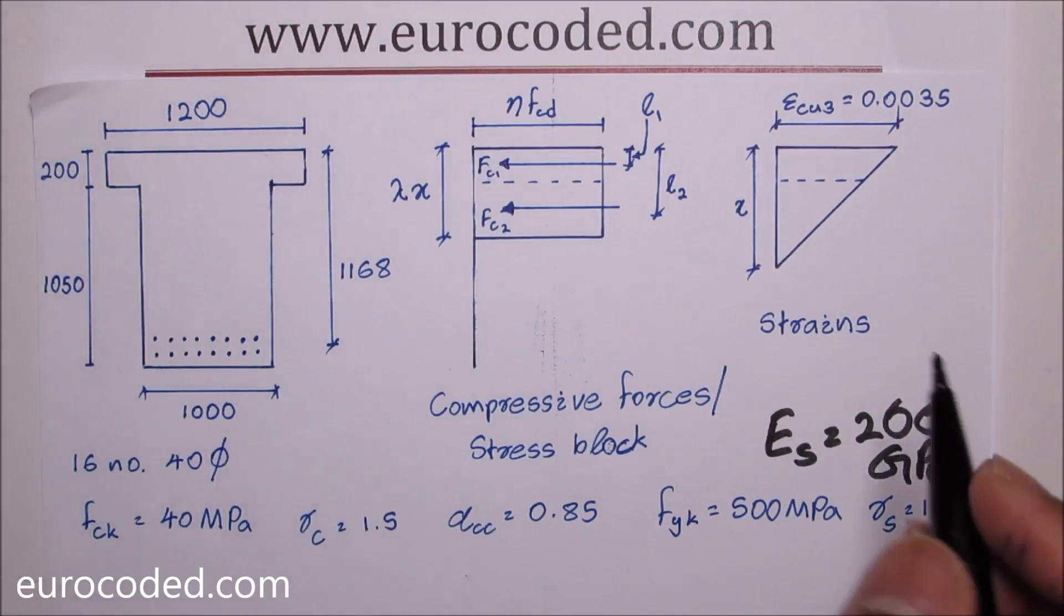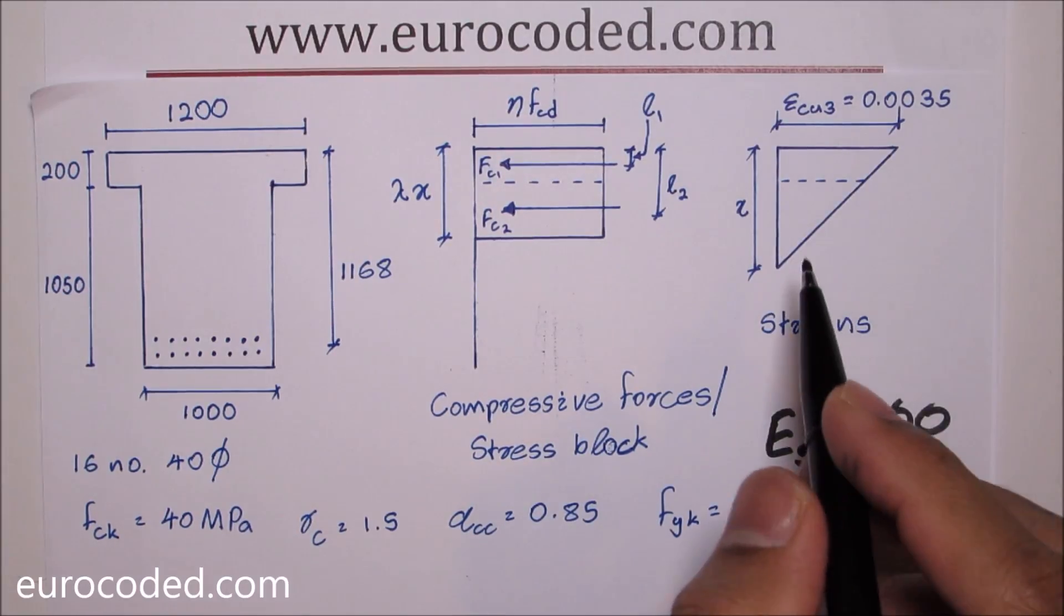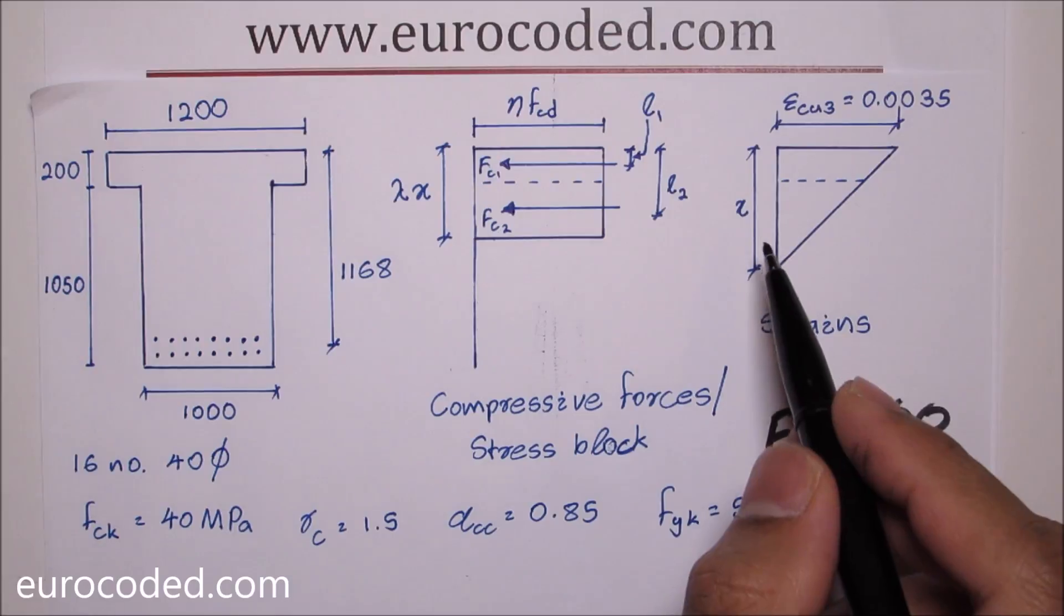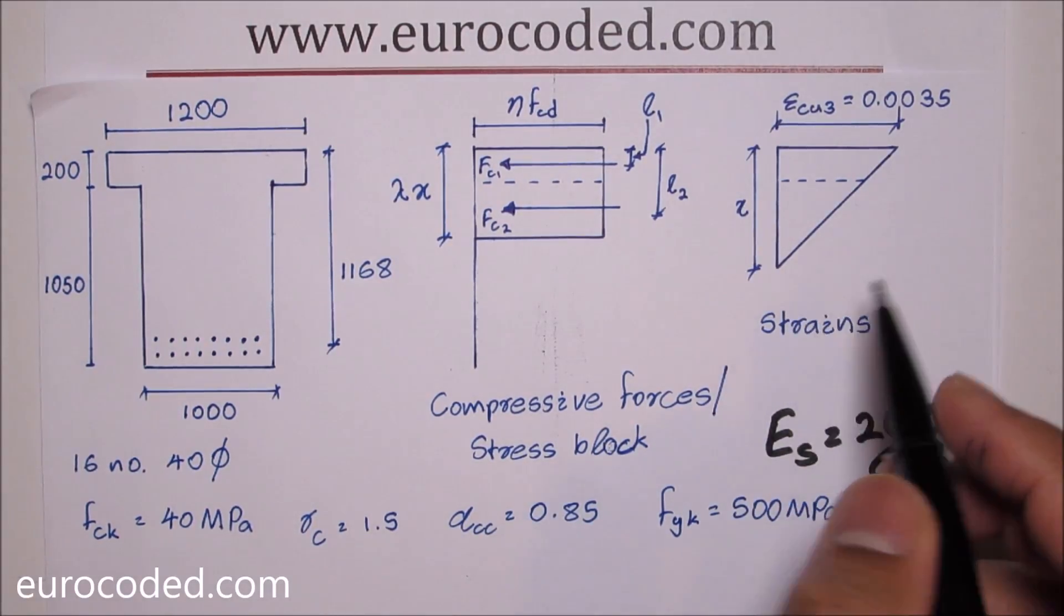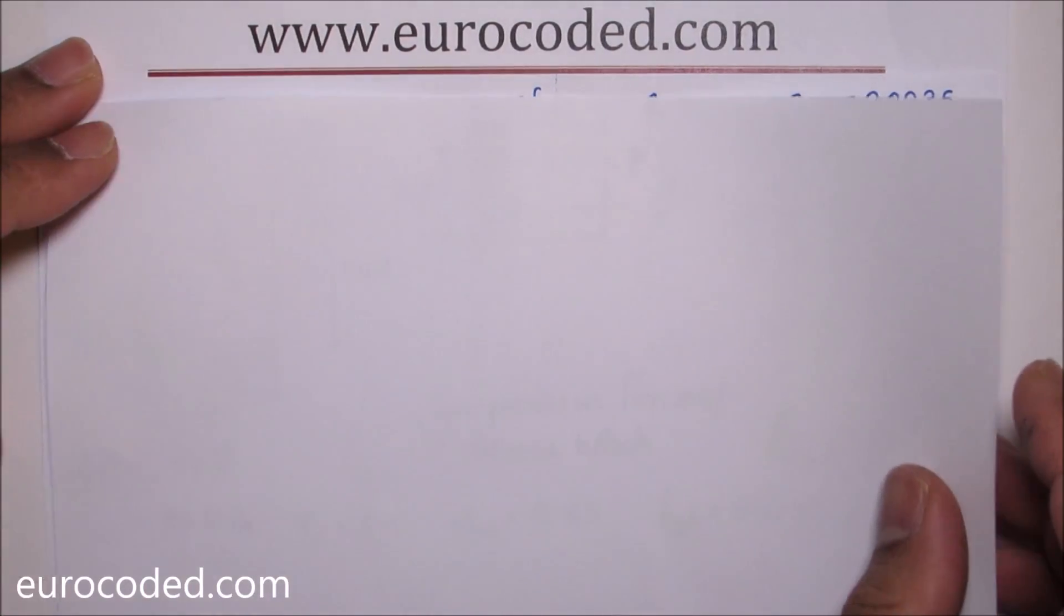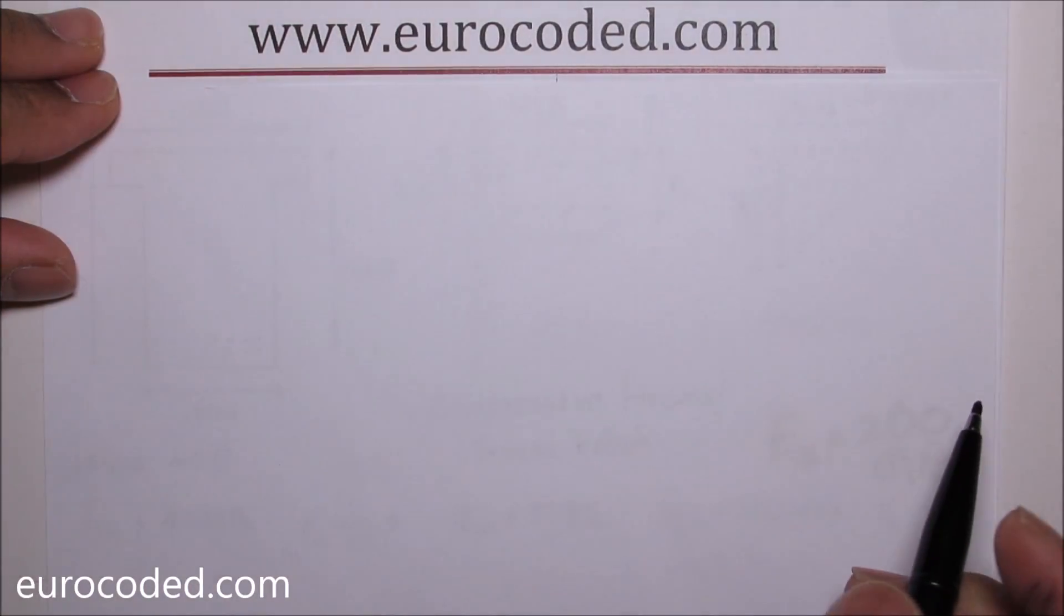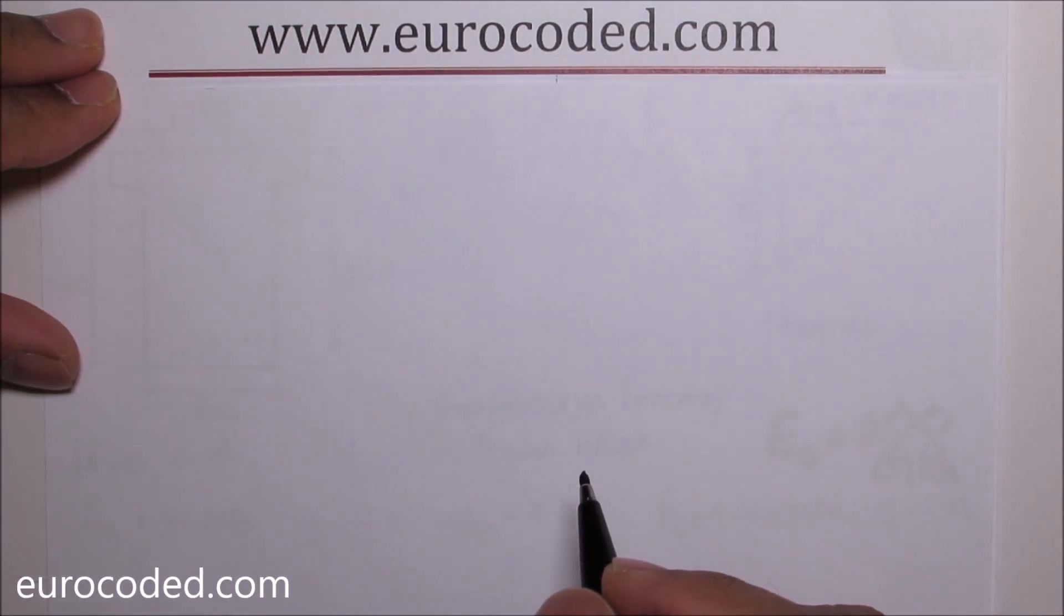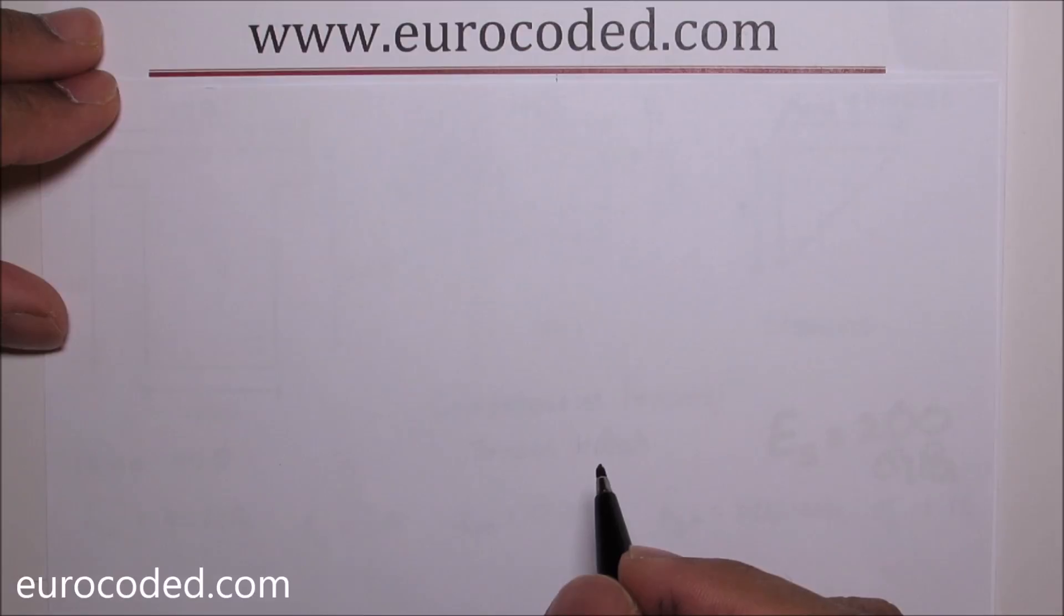What I've done here in this example, I've already calculated what the correct neutral axis depth is, which is X value here, and I'm going to use that for this example. Otherwise this is going to be a lengthy repetitive process. If you would like me to explain this iterative process in detail please let me know. I will do another video on that topic.